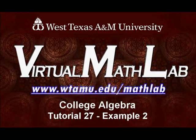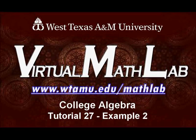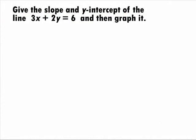Hi, welcome to the WTAMU Virtual Math Lab. This video will step you through College Algebra Tutorial 27 Example 2. In this example, we want to find the slope and y-intercept of the line 3x plus 2y equals 6 and then graph it.